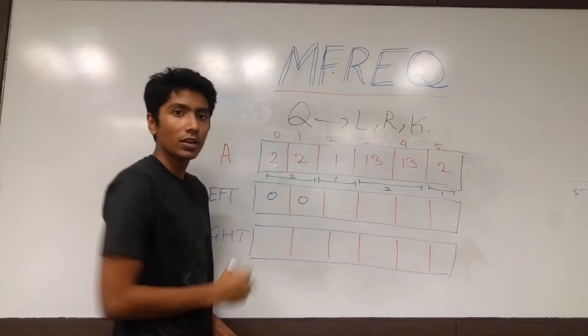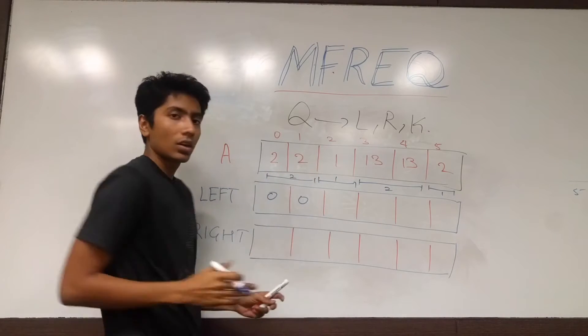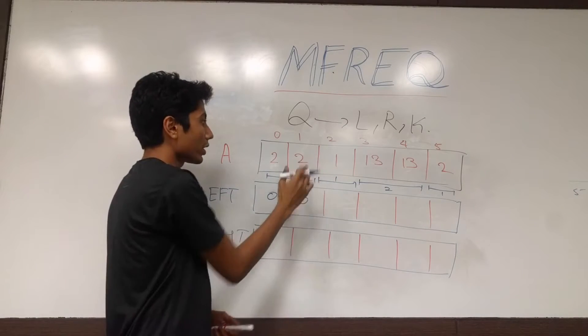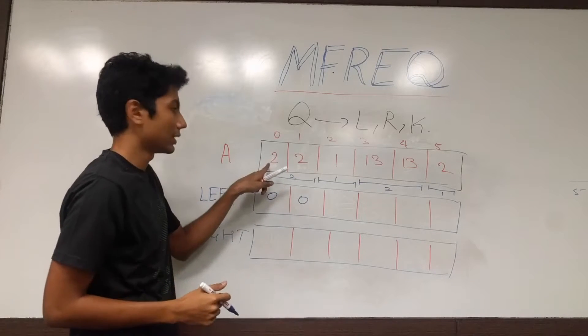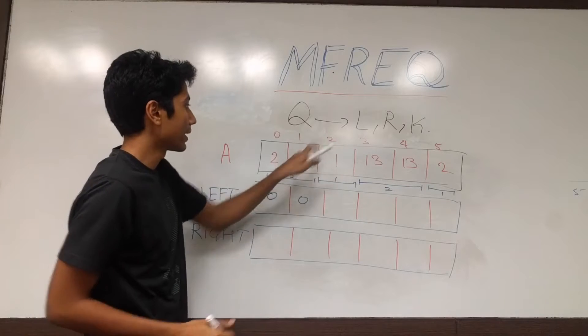We come here to 1. We check if its previous element is equal to it. 1 is not equal to 2. Again, the same condition as this element is given, which is the index 2 is stored.